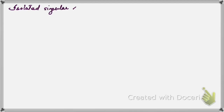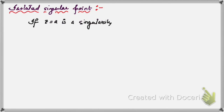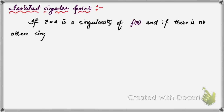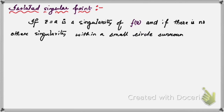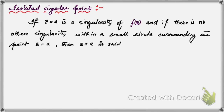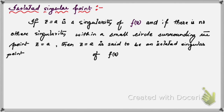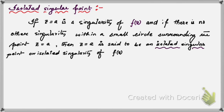As the word suggests, an isolated singular point is defined as follows: if z = a is a singularity of a function f(z), and there is no other singular point within a very small circle surrounding the point z = a, then z = a is said to be an isolated singular point or isolated singularity of the function f(z).